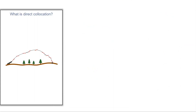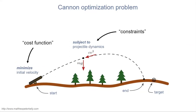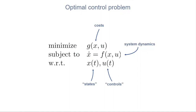MoCo is built on the method of direct collocation, but what is direct collocation? To build up to how the method works, we'll start with a simple cannon optimization problem. Our cost function is to minimize the initial velocity of the cannonball, and our constraints are that the cannonball obeys projectile motion dynamics subject to gravity and drag, that we meet the boundary condition at the end, and that we hit the target. This is an optimal control problem. You're solving for your model's state x and controls u while obeying the physics expressed as a set of differential equations, trying to minimize some cost quantity g. The variables x and u are continuous with infinite unknowns, and the constraints are differential equations, making these problems uniquely challenging.